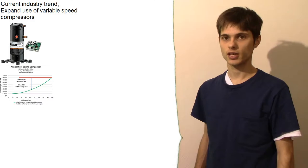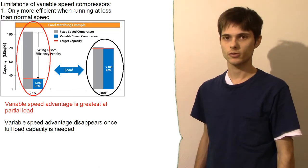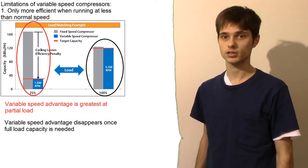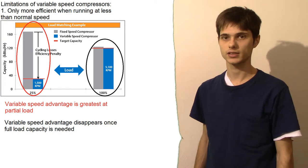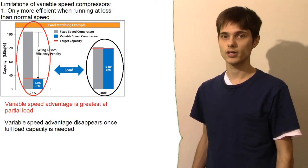However, variable speed technology is not without its limitations. Primarily, the limitation is the compression only becomes more efficient when the compressor is operating at less than its normally rated speed. Which is okay in most situations because in most situations full capacity isn't needed all the time. So the compressor speed can be reduced and the efficiency can go up most of the time, but not all times.